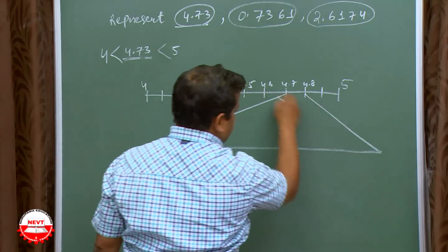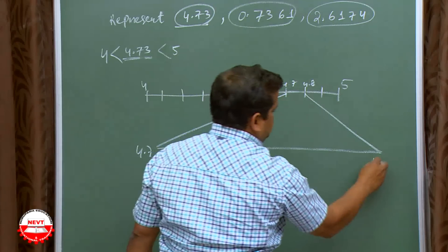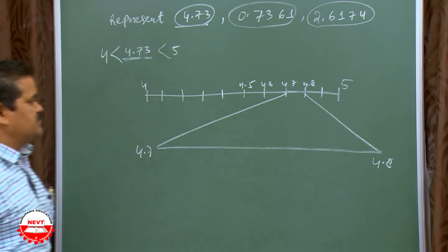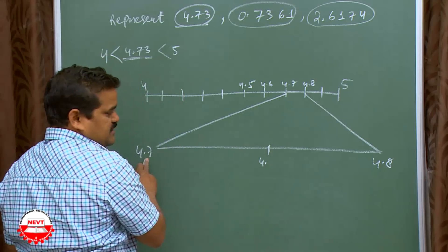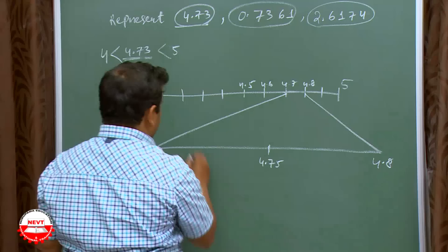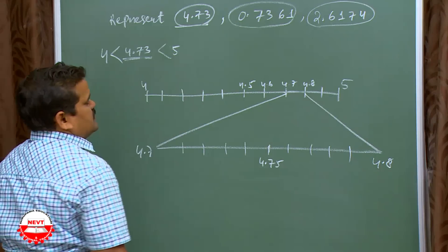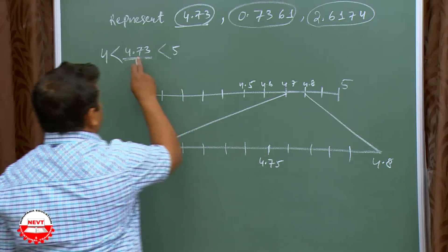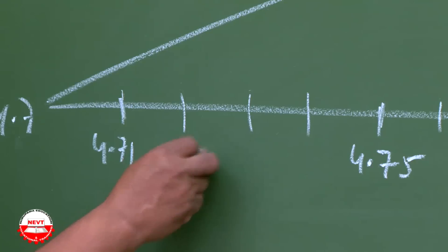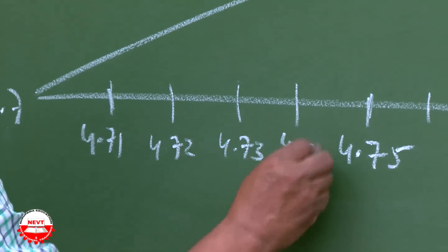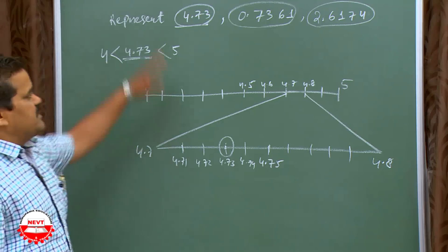In the book one lens is shown — we have to magnify this part. So this is 4.7 and this is 4.8. The exact middle part is 4.75. You can divide it into 4 equal parts: 4.71, 4.72, 4.73, 4.74, 4.75. You need 4.73, so this point is your required point. Magnify this — you understand?